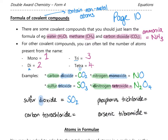Sulfur dioxide should be SO₂ — no prefix on sulfur, and di-oxide means two oxygens. Carbon tetrachloride is CCl₄ because tetra means four chlorines. Phosphorus trichloride is PCl₃ — P for phosphorus and three chlorines from trichloride. Arsenic tribromide is AsBr₃ — As for arsenic and three bromines from tribromide. With covalent compounds you get the formula from the name; no swap and drop needed.